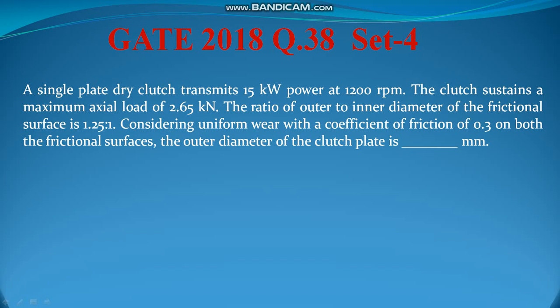Since the inner diameter and outer diameter ratio is given, if you find out one, you can find out the other. This is a straightforward clutch problem. Let us try to understand and solve this problem from the basics.